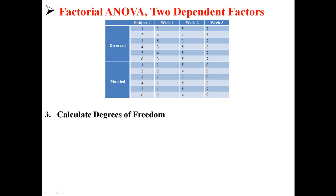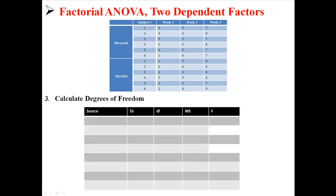Now we're going to calculate the degrees of freedom. This is our source table. We're going to have three effects: marital status (A), week (B), and the interaction A×B, plus total. We're also going to have four different error terms, because all the factors are dependent — one error term associated with A, one with B, one with the interaction A×B, and one for consistent subjects variability. So we have eight different sources, meaning we calculate eight different degrees of freedom.